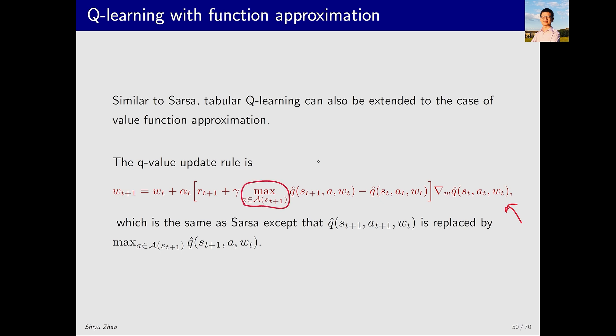The only difference is here: earlier there was no maximization, and a_t was previously a_t+1. If you're familiar with tabular Q-learning, you'll know this part is essentially the TD target.